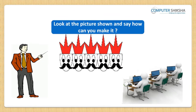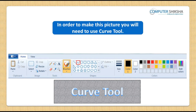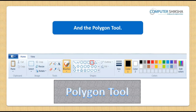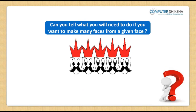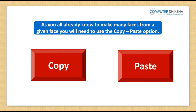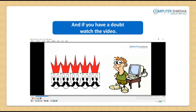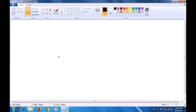Look at the picture shown and say how you can make it. In order to make this picture, you will need to use the curve tool, oval tool and the polygon tool. Can you tell what you will need to do if you want to make many faces from a given face? As you all already know, to make many faces from a given face, you will need to use the copy paste option. Make this picture and if you have a doubt, watch the video. We will use the curve tool, the oval tool and the line tool.